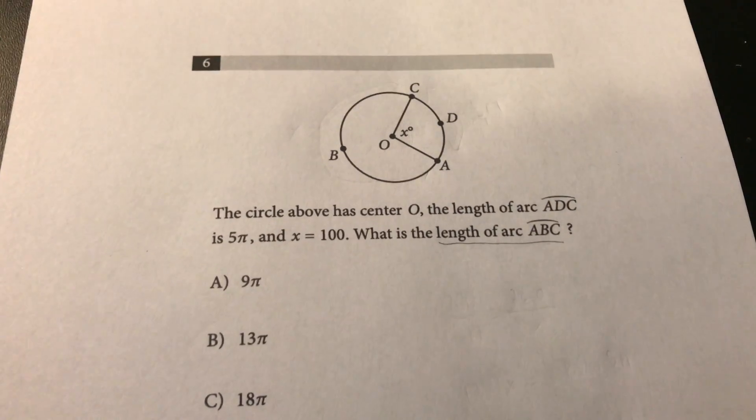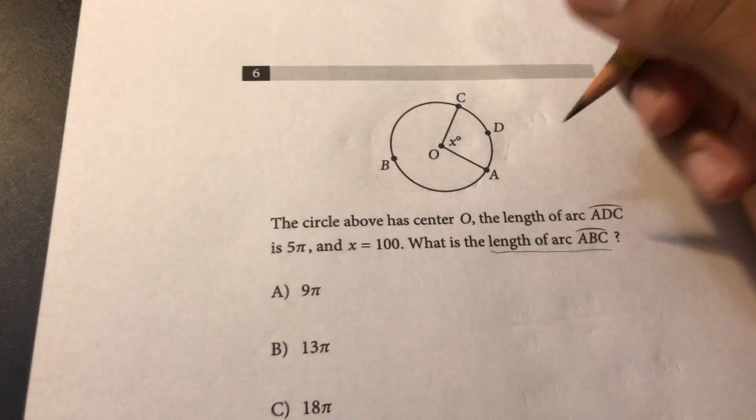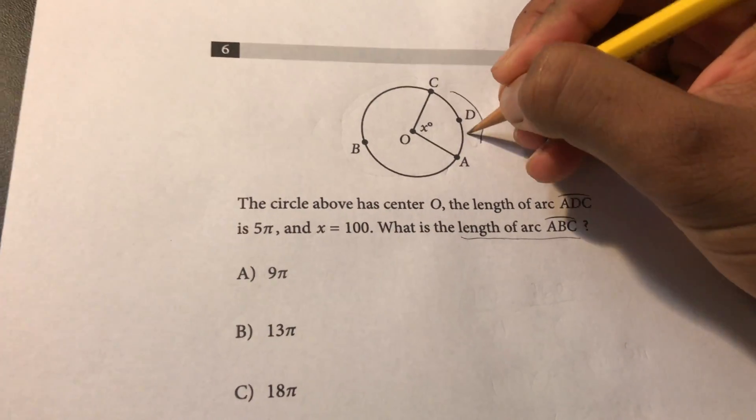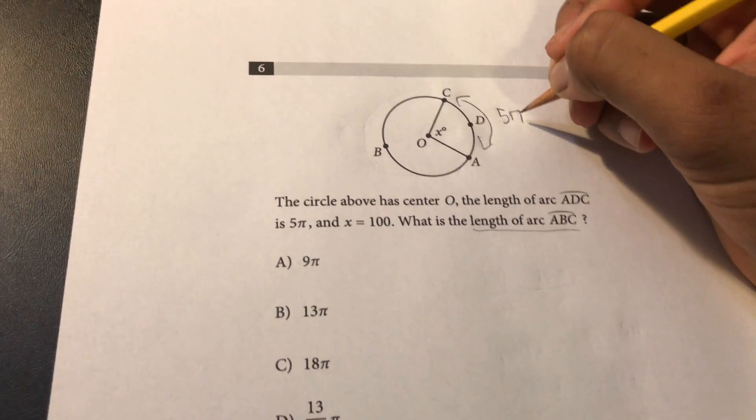Okay so the circle above has center O and the length of arc ADC is 5π, so we know that the length of arc ADC is equal to 5π and it says x is equal to 100.